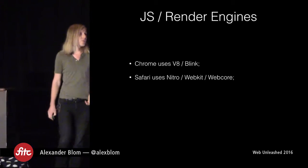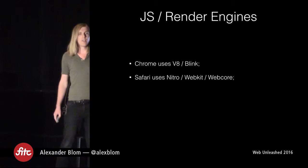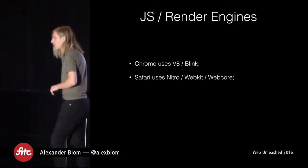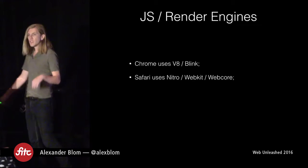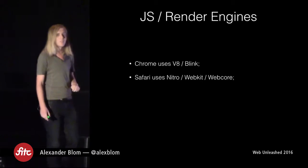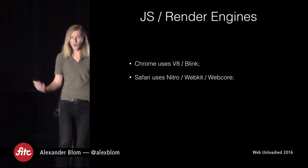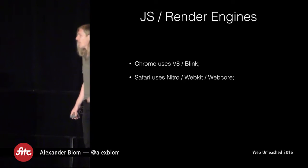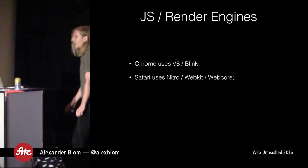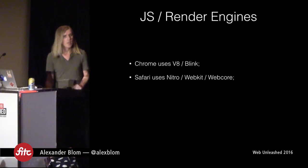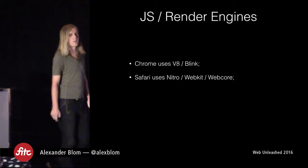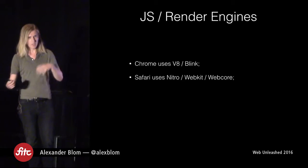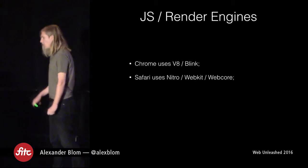Chrome and Safari use slightly different engines under the hood. Chrome's JavaScript engine is called V8, which framework developers either love or complain about. Its rendering engine is called Blink. Safari uses Nitro and WebKit — WebCore being the rendering engine, while WebKit is a combination of a rendering engine and a JavaScript piece.